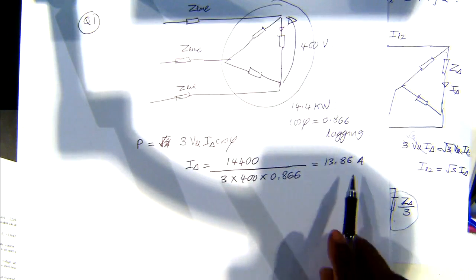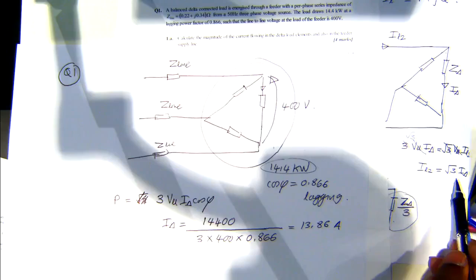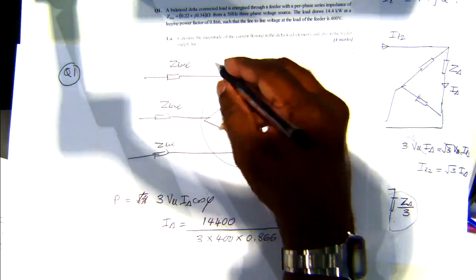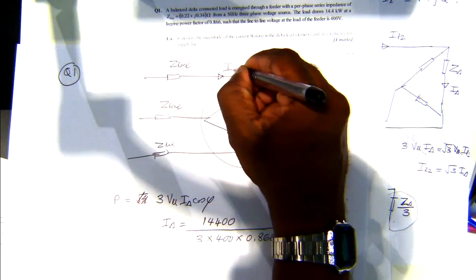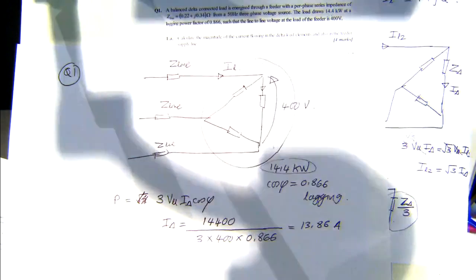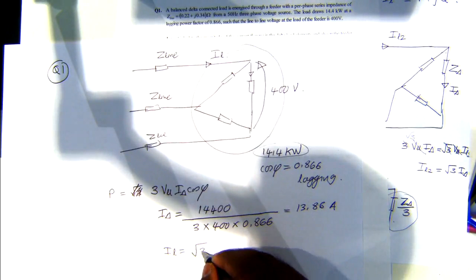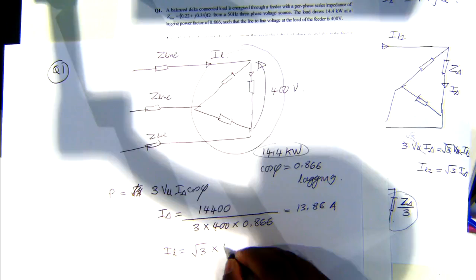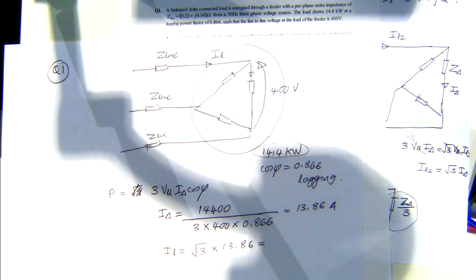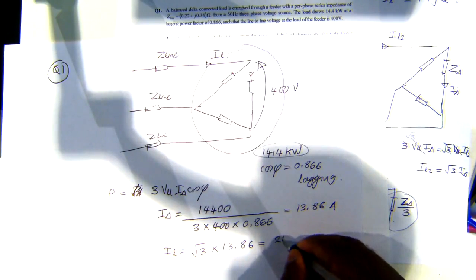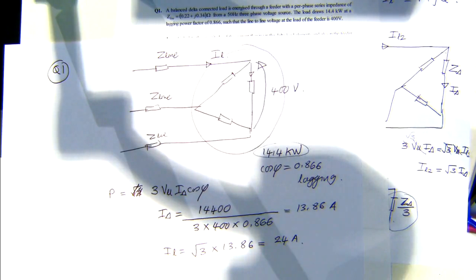Once you know that, we can apply the relationship between line current and branch current to find the line current. I_line is root three times I_delta, so that's root three times 13.86, giving you 24 amperes line current.